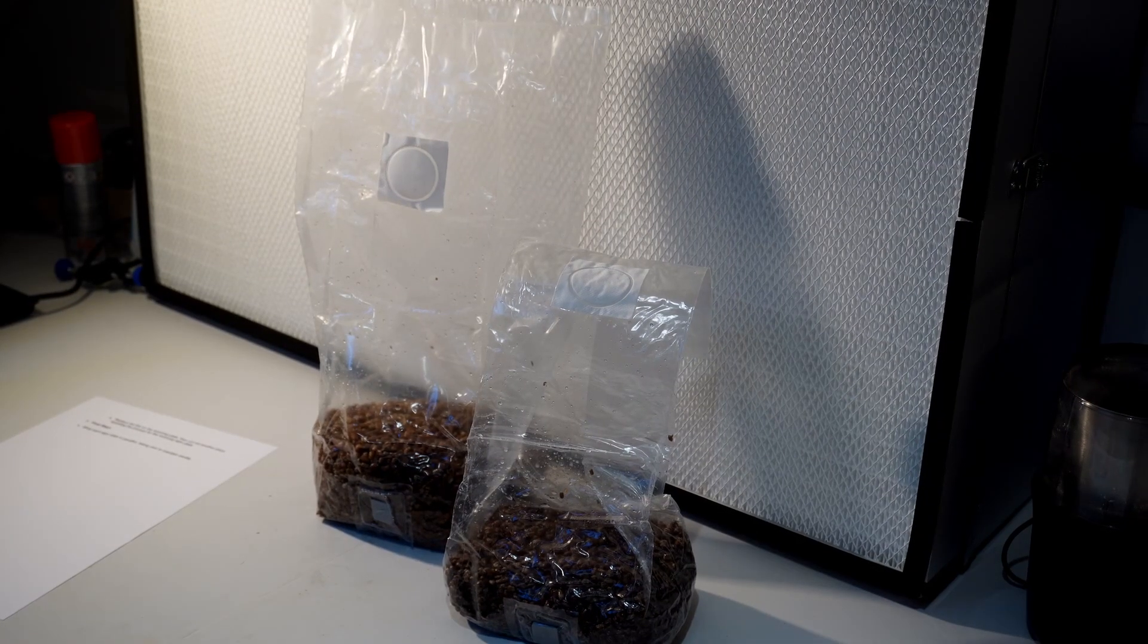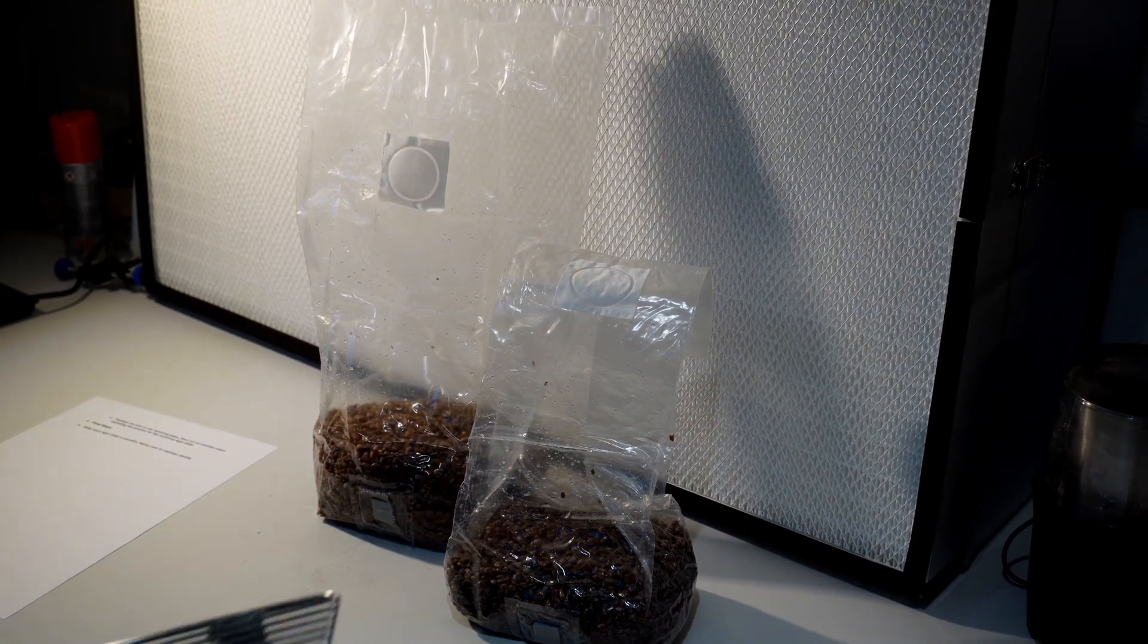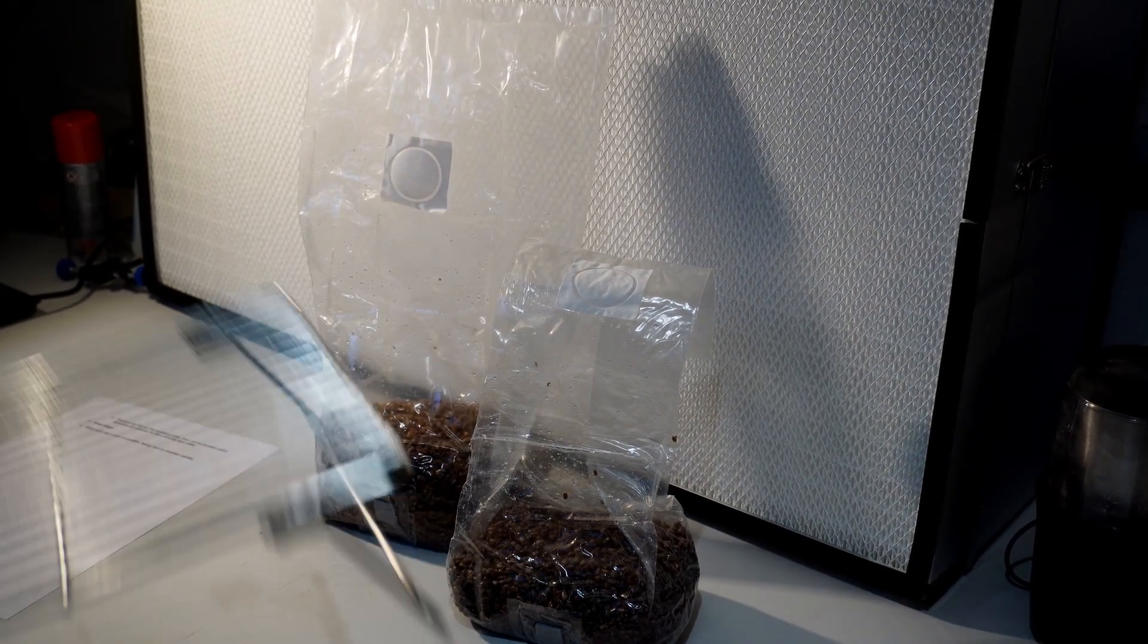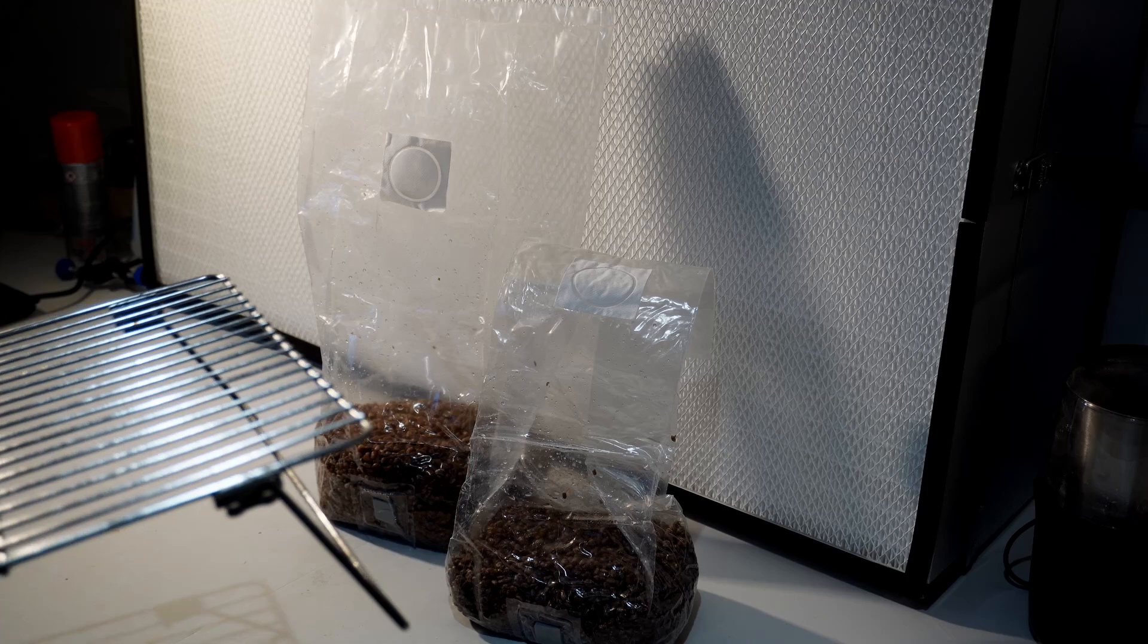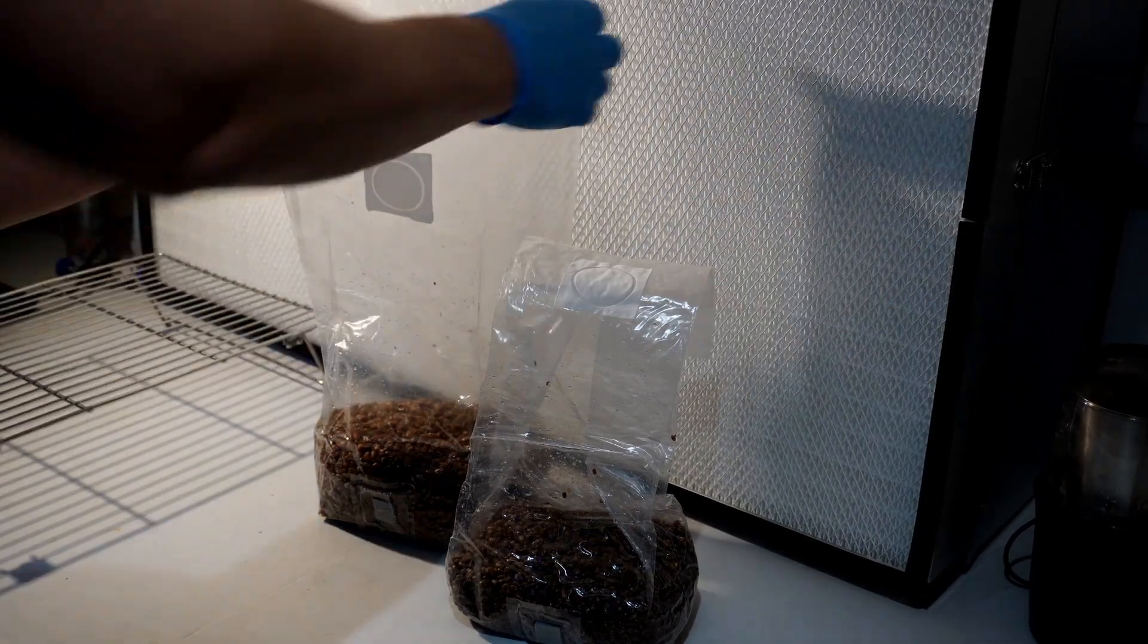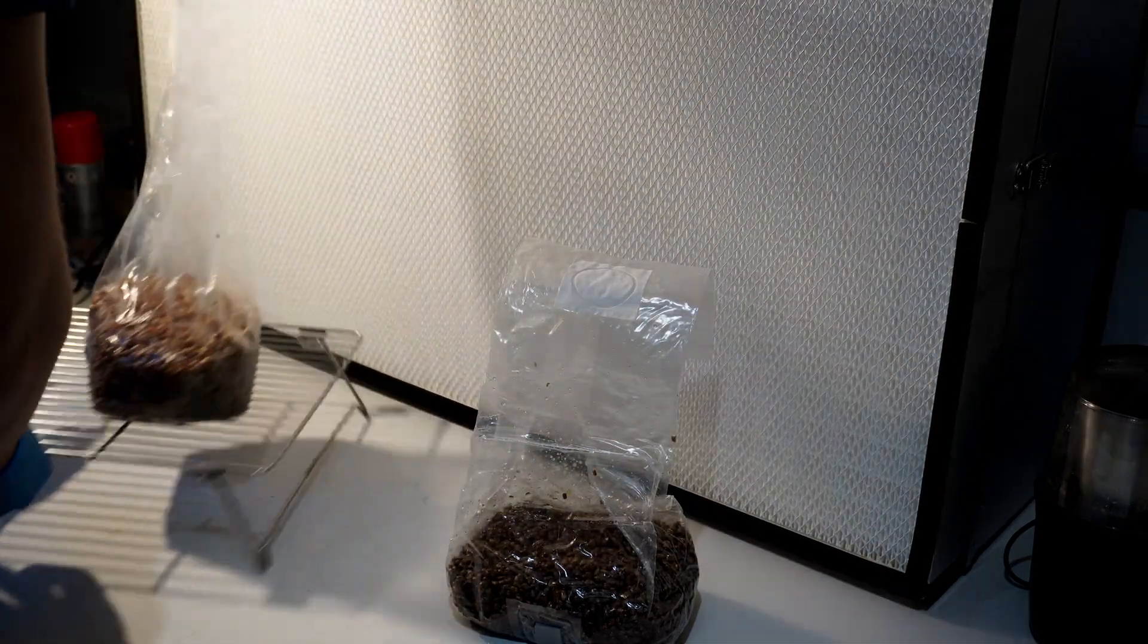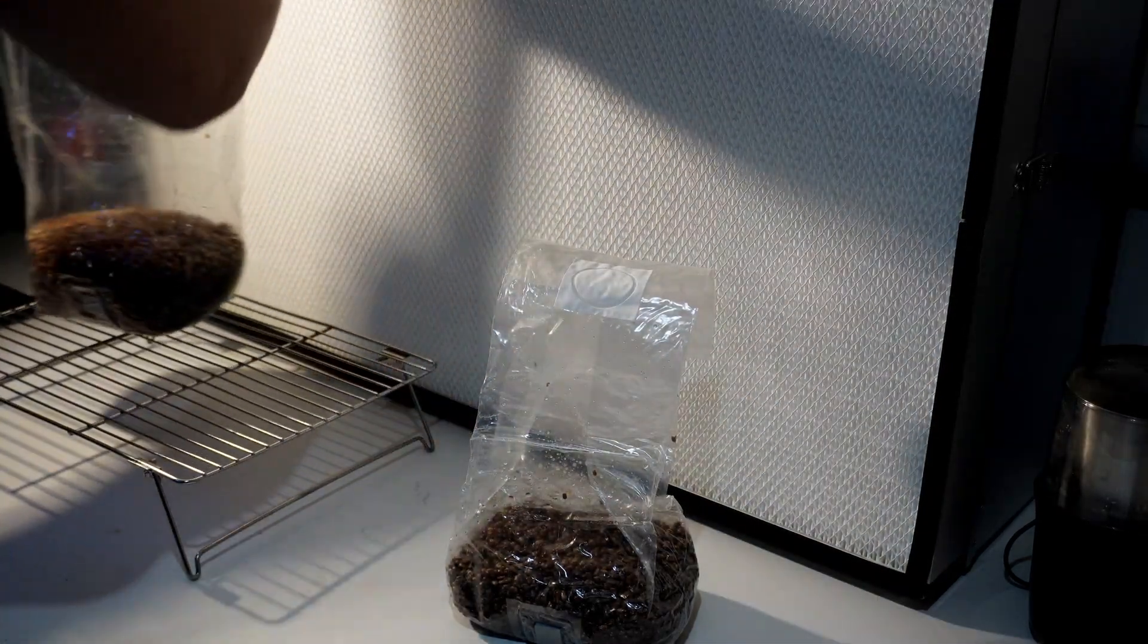This time I'm going to be showing you how to do it in front of a laminar flow hood or fan filter unit as I am using here. These bags I sealed earlier using an impulse sealer and first thing you're going to want to do is raise the grains up off the ground using a wire rack so that the actual sterilized grain is in front of the filtered air.